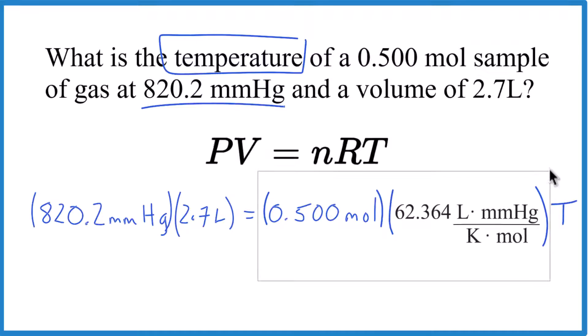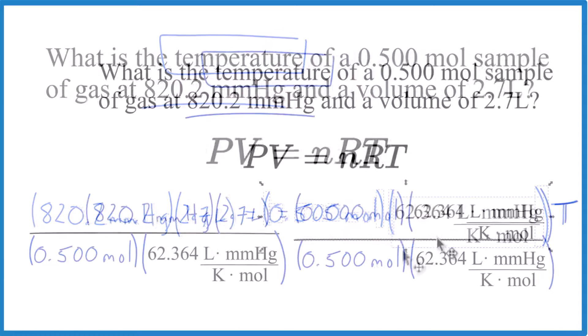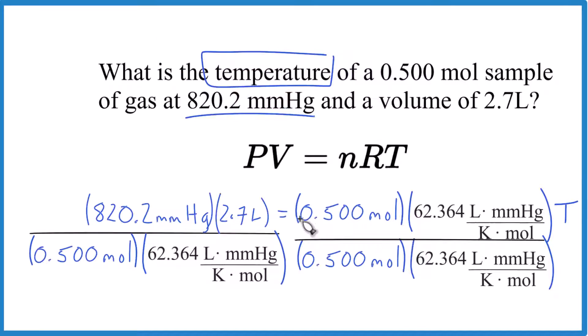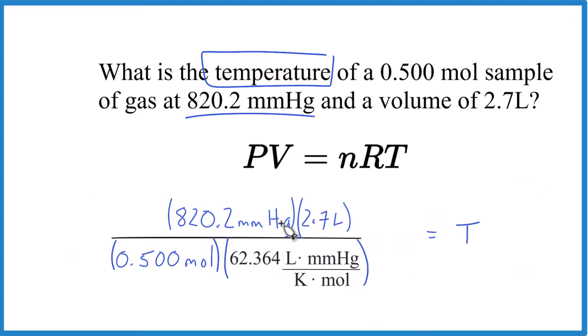So let's divide both sides by this here. And that way all of this, that cancels out. Let's get rid of that. So now we have millimeters of mercury in the top and the bottom. That cancels out. Liters cancels out. We have moles here. Moles here we're left with Kelvin. That's the temperature we're looking for.